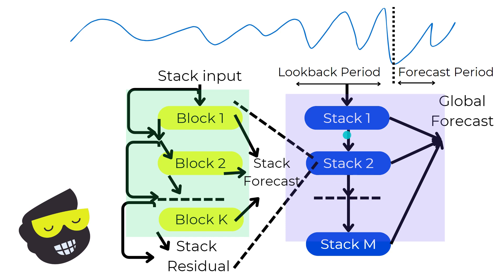For instance, stack 1 processes the look-back period data through its blocks, producing a final residual. This residual becomes the input for stack 2, which then repeats the process of refining the forecast using its own blocks. This staging of residuals ensures that each subsequent stack builds upon the refinements of the previous one, progressively improving the forecast accuracy. This iterative process continues until the last stack, stack M, which contributes to the global forecast by integrating the refined predictions.